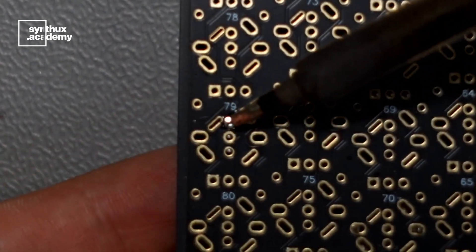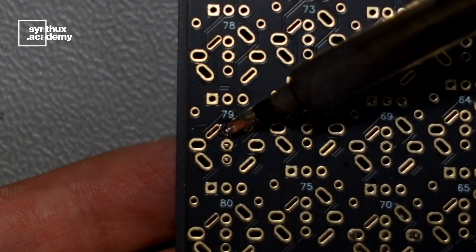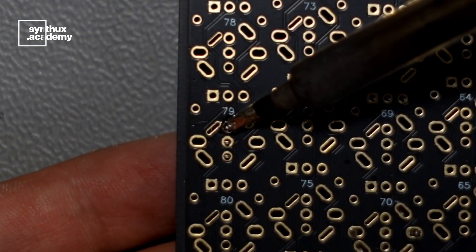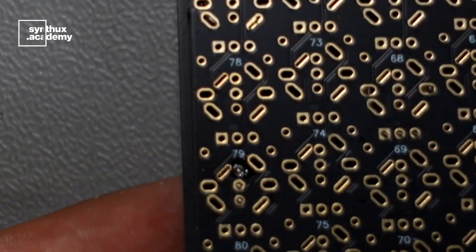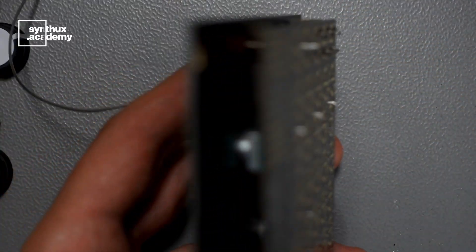Then we're going to put our finger under the switch and lift it up while the soldering iron is warming up that pad. Then we can take off the soldering iron. The switch is going to cool down and stay in place.